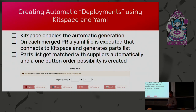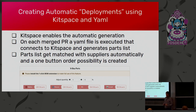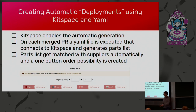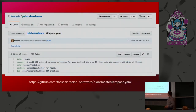Where we are now: we're creating automatic deployments using KitSpace and YAML. KitSpace already does a lot of what we need — it enables automatic generation of a kind of build list. On each merged pull request this YAML file is executed, it connects to KitSpace, generates a parts list, and that parts list can be matched with different suppliers. Let me show it — it's easier to show than talk about.